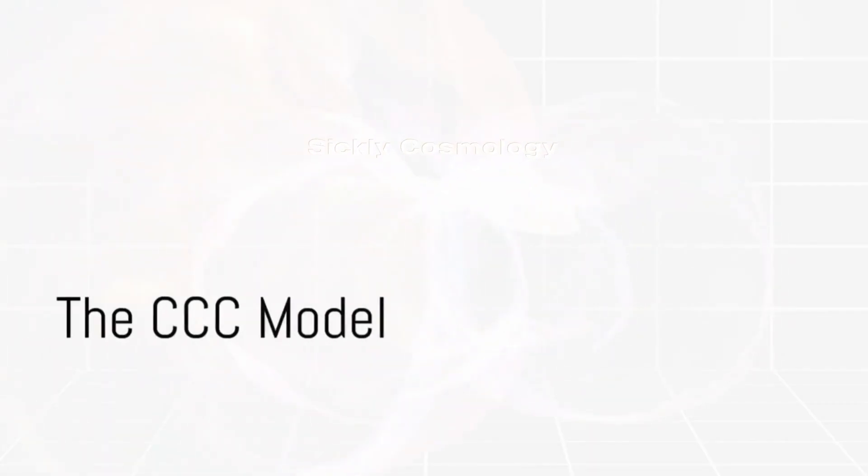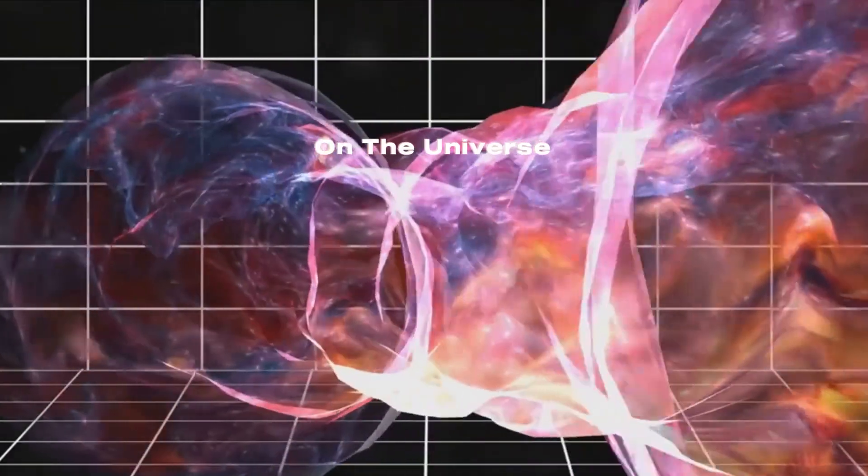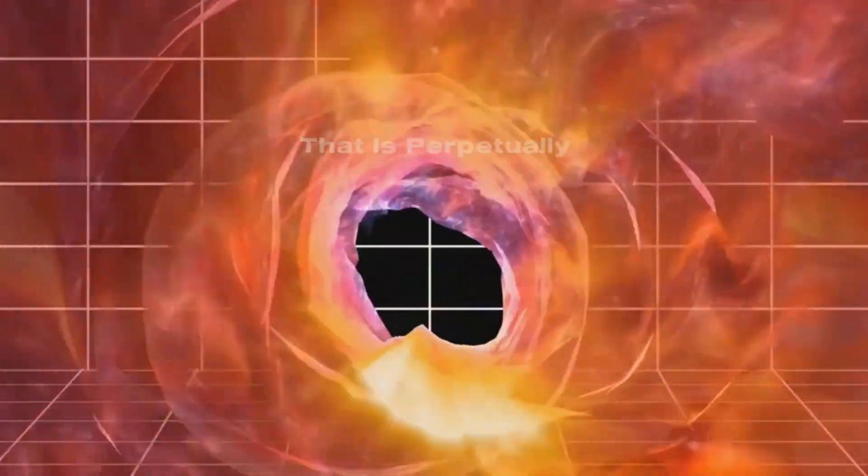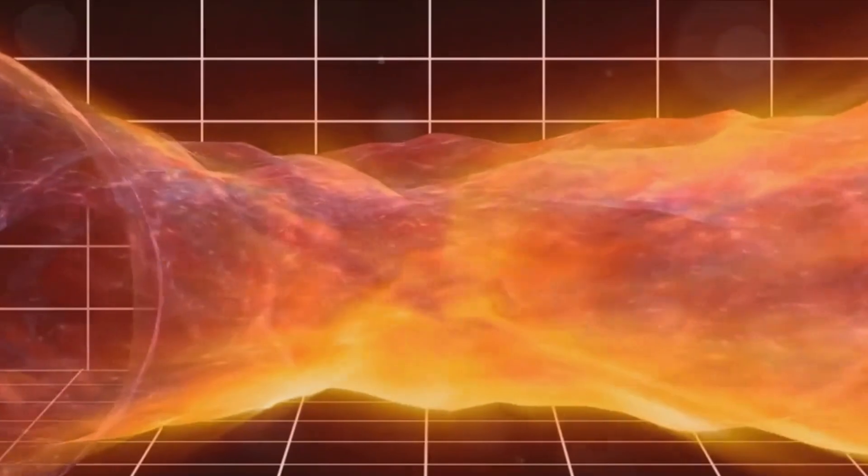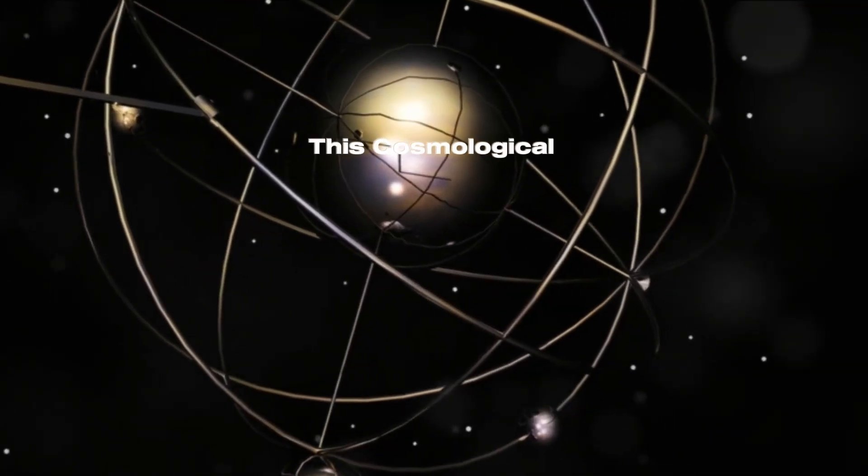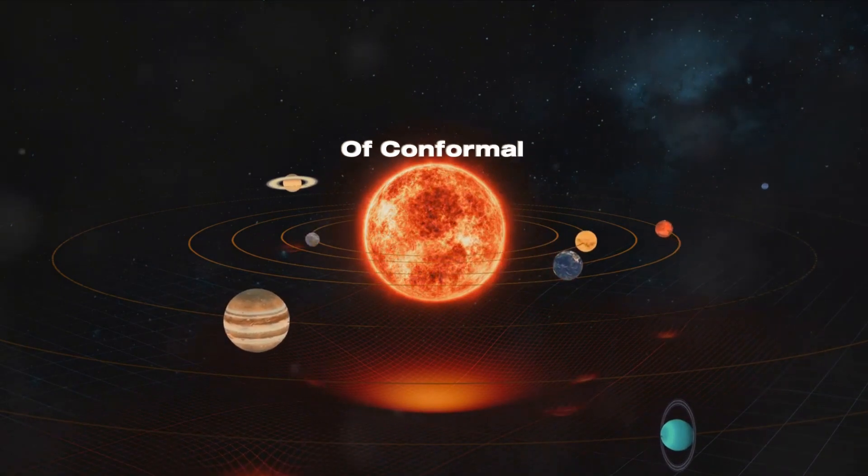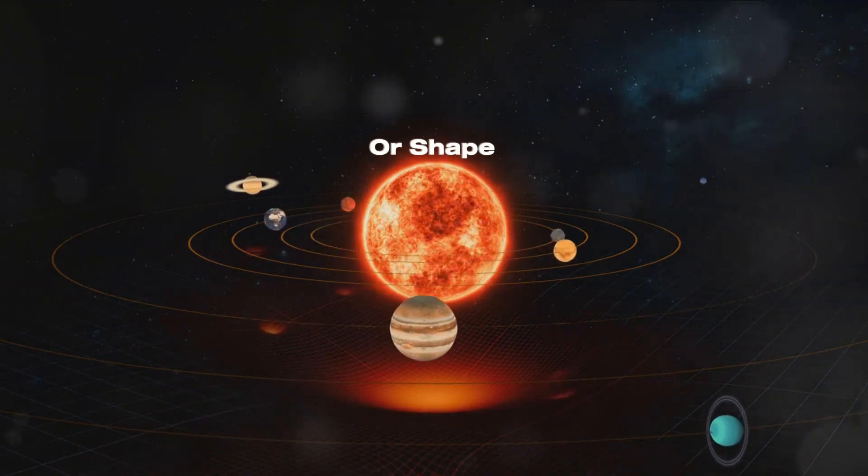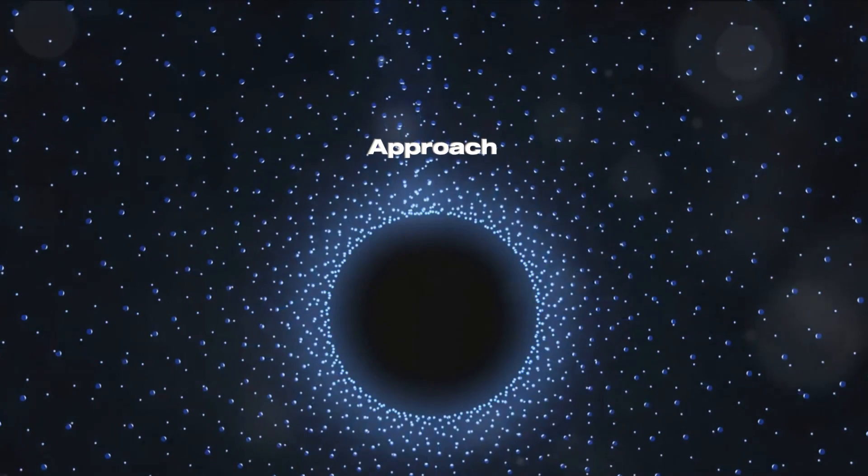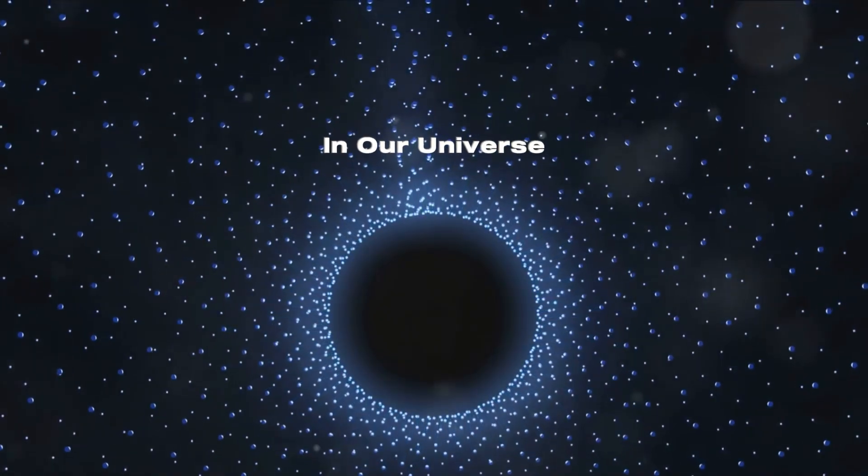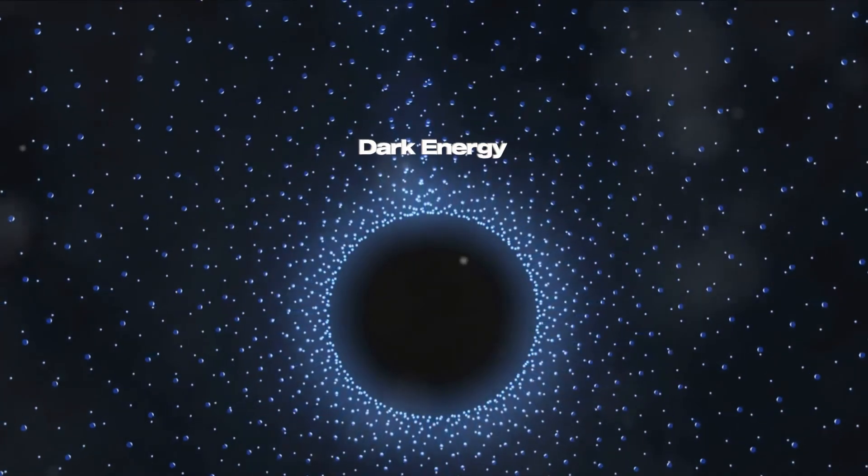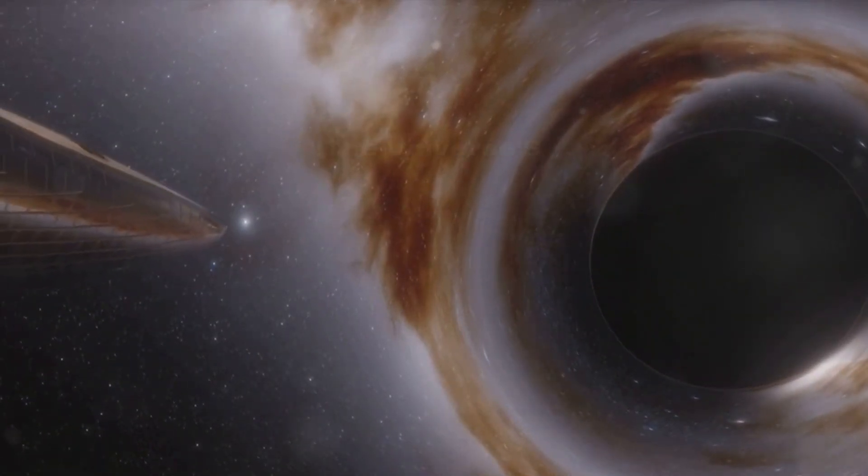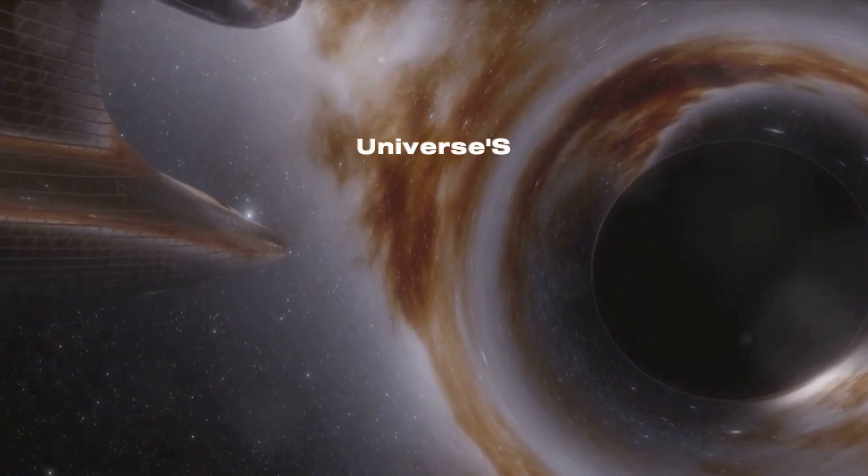The Conformal Cyclic Cosmology model presents a unique perspective on the universe. This model, often simply referred to as the CCC model, suggests a universe that is perpetually cycling, each cycle beginning with a big bang and concluding with a big crunch. This cosmological model is deeply rooted in the concept of conformal symmetry, a particular type of symmetry that preserves the angles between objects, regardless of their size or shape. The CCC model offers an innovative approach to some of the most puzzling phenomena in our universe, providing a theoretical framework for understanding dark energy and dark matter. It suggests that dark energy, a mysterious force that seems to be accelerating the universe's expansion, is an integral part of the universe's cyclic nature.